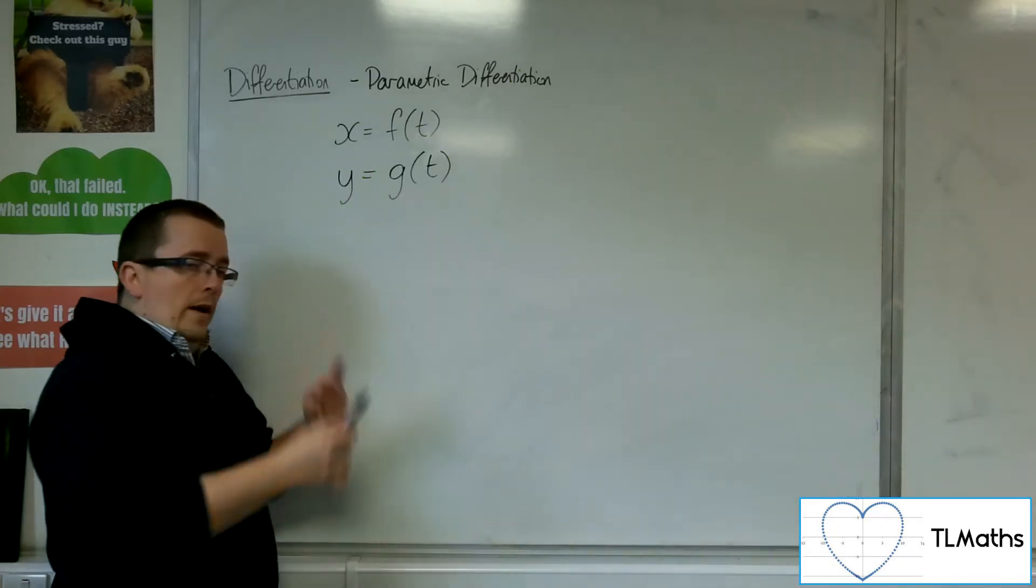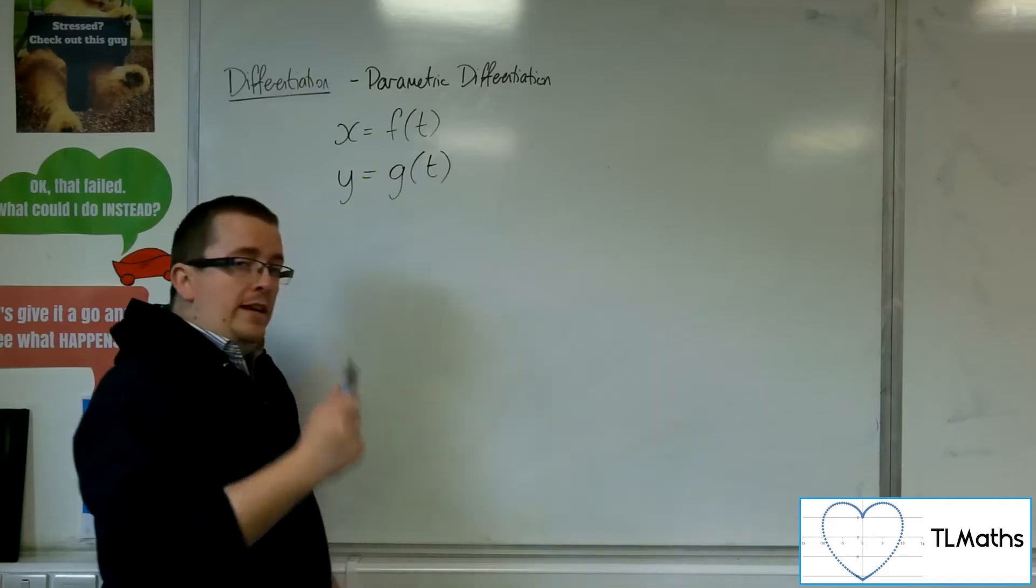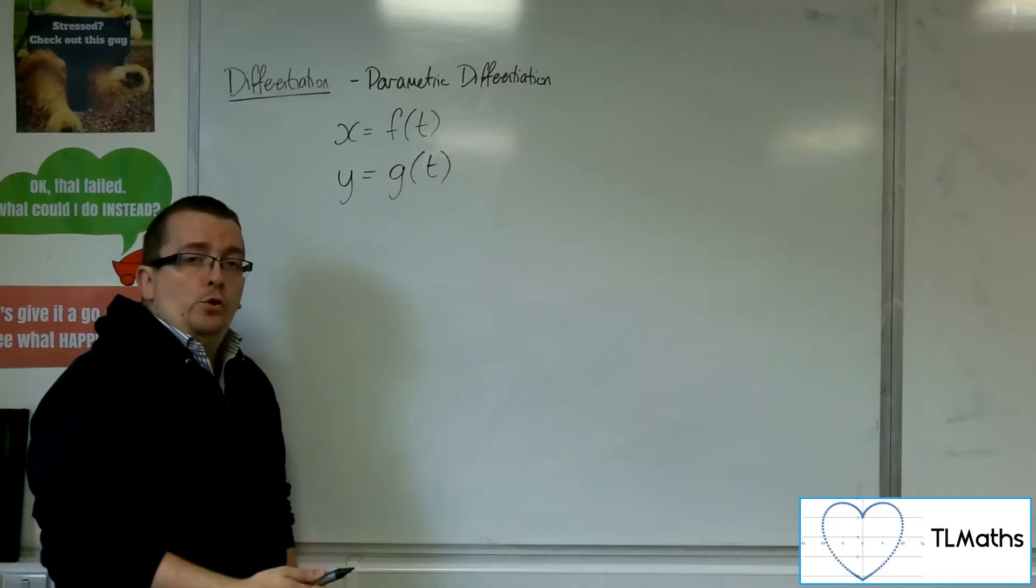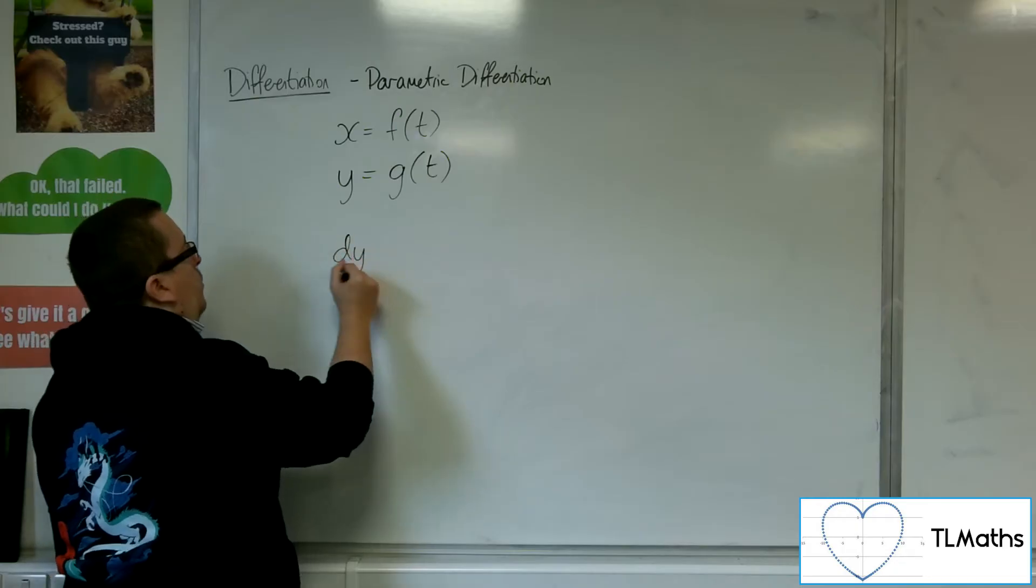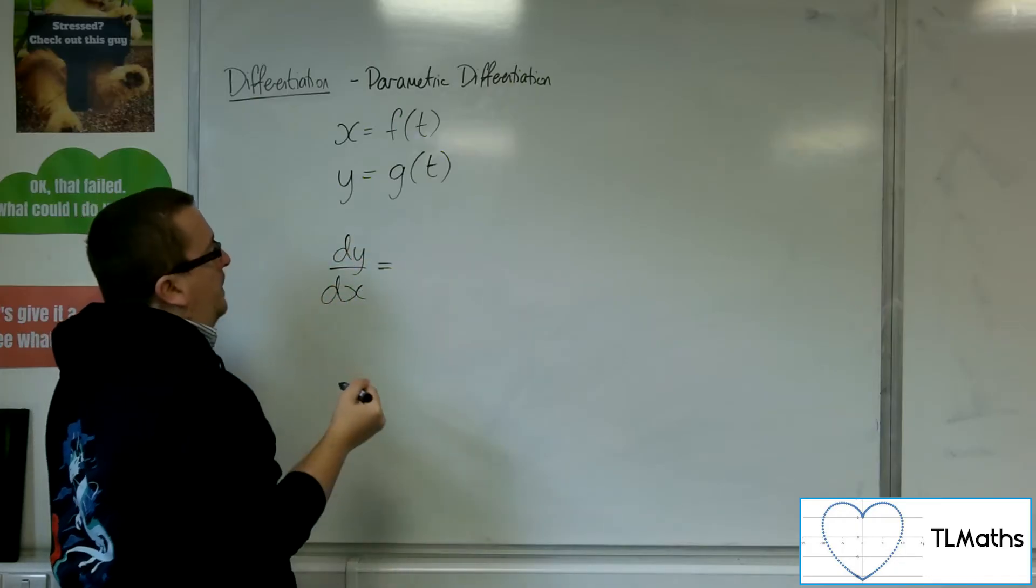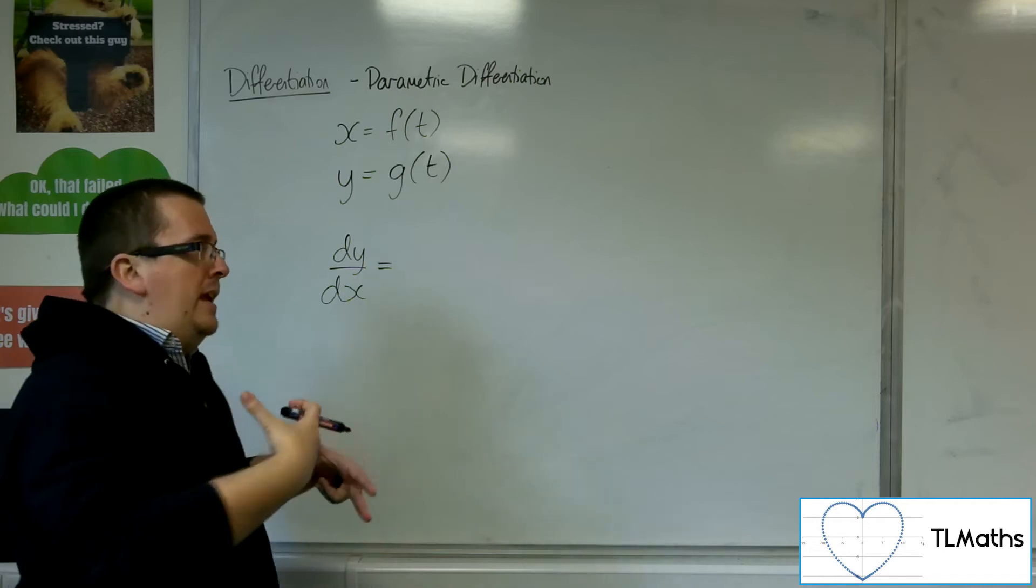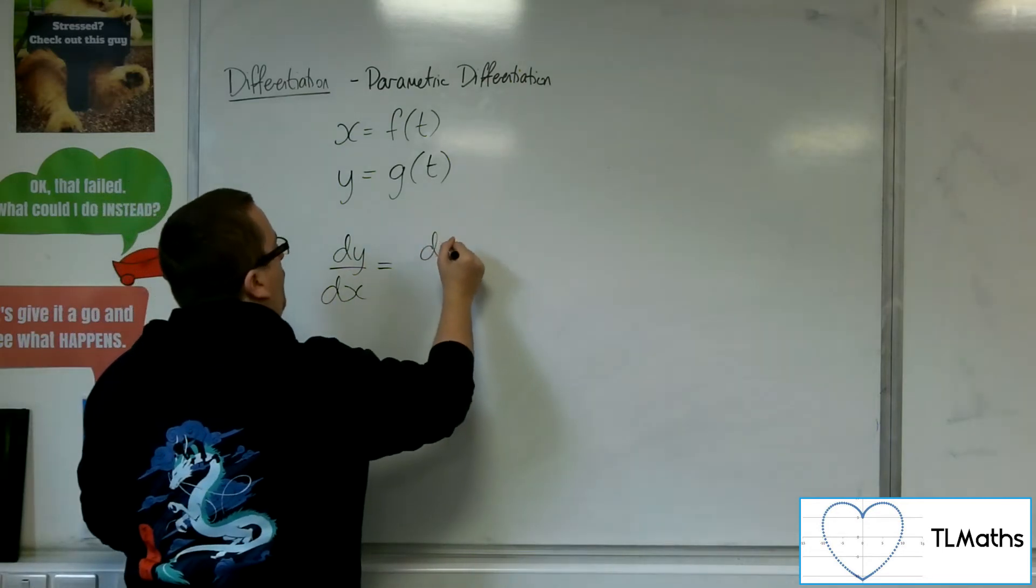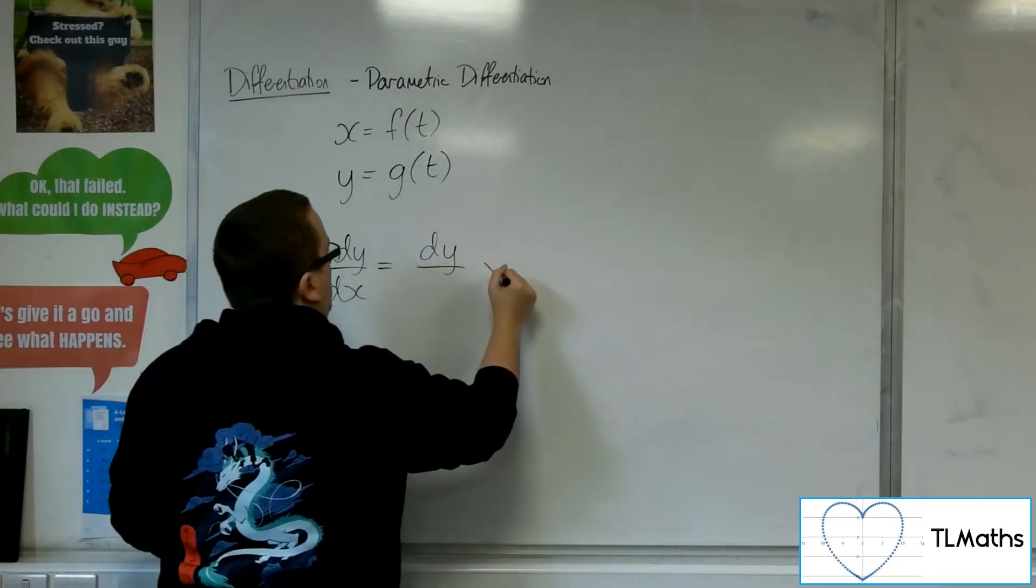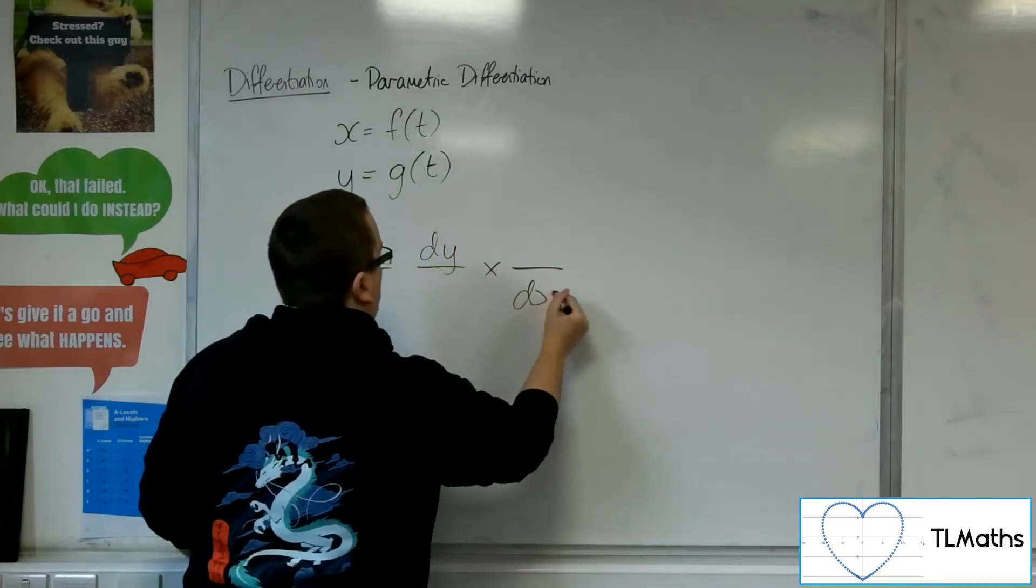Now, the way that works actually uses something we've seen before, the chain rule. So dy by dx, we know from the chain rule, can be looked at and used as a product of two derivatives.